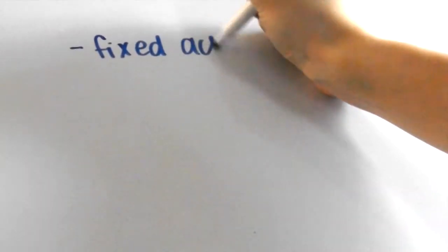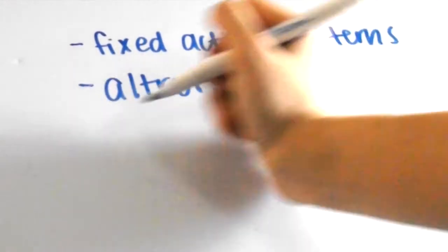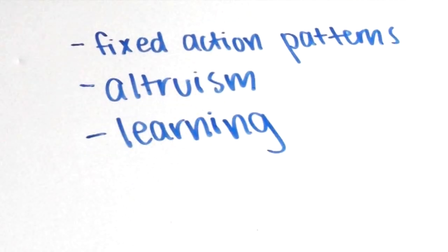In this video we're going to go over what fixed action patterns are, altruism, and ways that animals can learn. It seems like a lot, but it'll turn out to be quite simple.